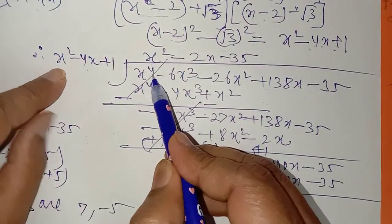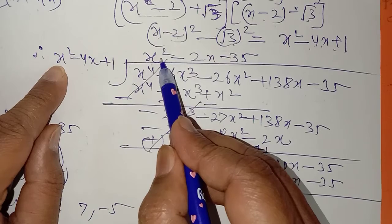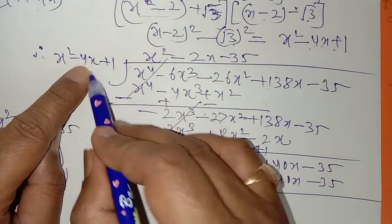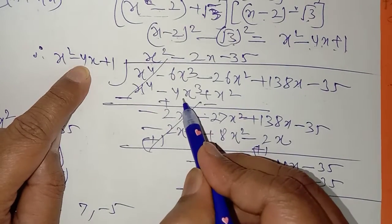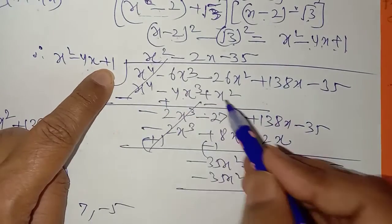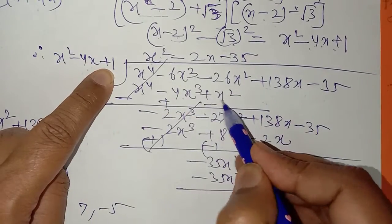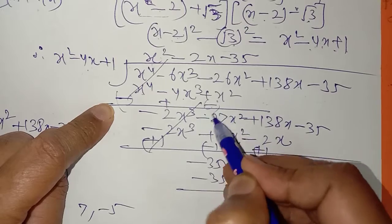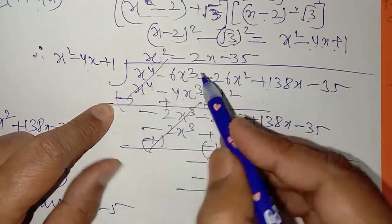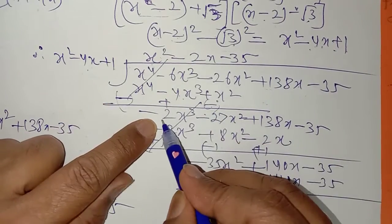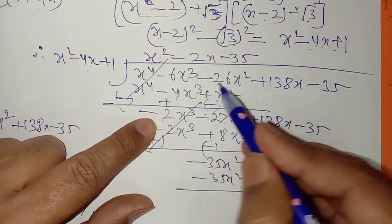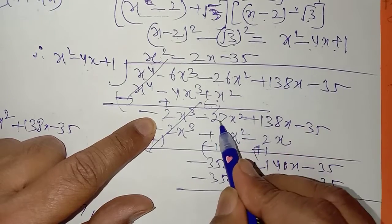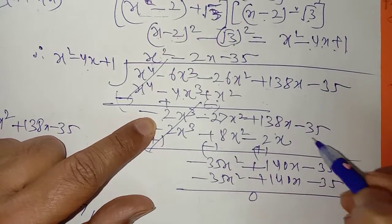x کی power 4 ہے، x square سے multiply کرنے پڑے گا۔ تو اس کو اس سے کرا: x کی power 4 آئی، minus 4x cube آیا، x square آیا۔ sign change کرتے ہیں: minus، plus، minus۔ یہ cancel ہو رہا ہے۔ minus 6 plus 4 equals minus 2 بچا، پھر minus 26x اور minus 27 ہو گیا، plus 138، minus 35۔